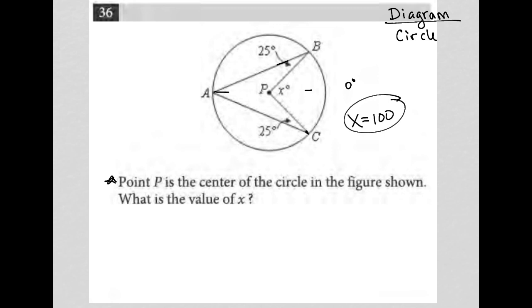Another way to treat this: I like to turn these things into shapes that I can deal with. So I put that line back there. I know that's 25 because I was told that, and I know that's 25 because this is an isosceles triangle. So if this is 25 degrees here and 25 degrees here, that's 50 degrees, which means the obtuse angle at the top of that triangle must be 130, because all three angles must add up to 180. The same thing happens in the other triangle — the 25 we saw before plus the 25 given equals 50, which means that angle would also have to be 130.